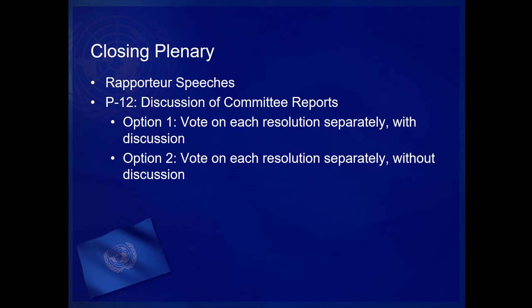Under Option 2, the General Assembly may decide to vote on the resolutions separately without discussion. As with the previous option, if this option is proposed, it is put to an immediate vote and requires a simple majority to pass. If the motion passes, the General Assembly considers each resolution in order. No debate or discussion takes place. The General Assembly simply votes on the individual resolutions until all resolutions have been either approved or rejected by the General Assembly.